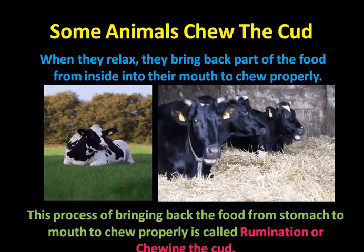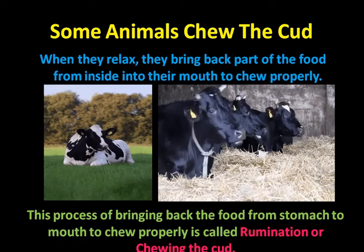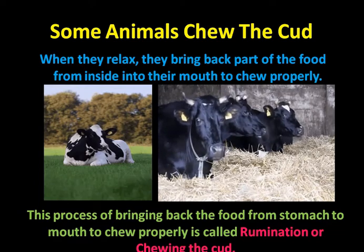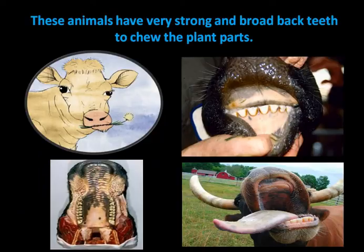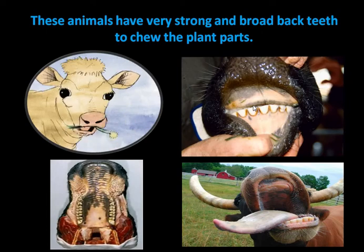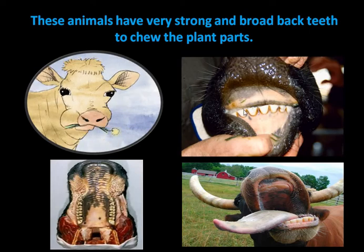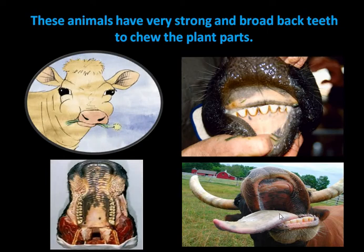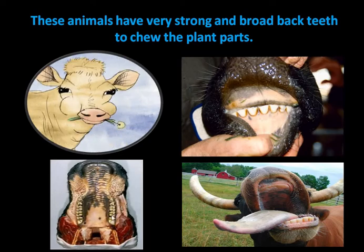So now you know animals like cow, buffalo, camel and even giraffe chew the cud. These animals which chew the cud have got very strong broad back teeth to chew the plant parts. Have a very close look at the teeth of the cow — they are flat and they are broad. This type of teeth helps them to chew the plant parts.